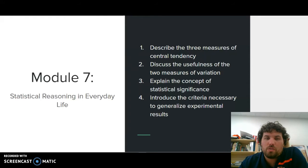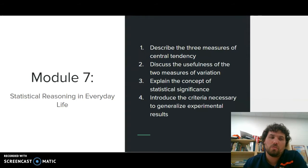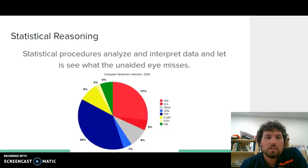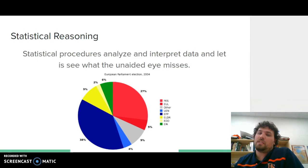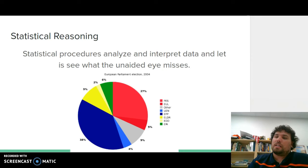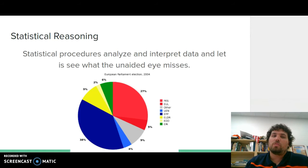We're going to go over quickly your Module 7: Statistical Reasoning in Everyday Life. So how do psychologists get their information? Statistical reasoning is a statistical procedure. When statistical procedures analyze and interpret data, they let you see what the unaided eye misses. It takes measures that we use and applies statistics so that we can see what's actually going on and then do things with the data.